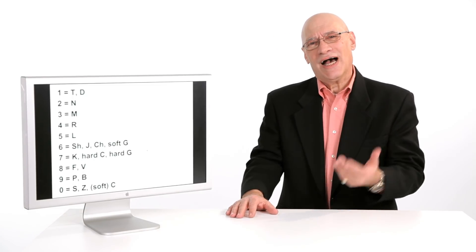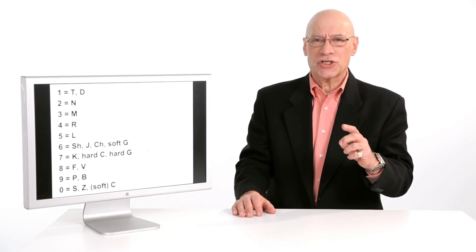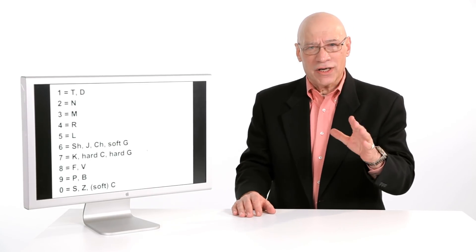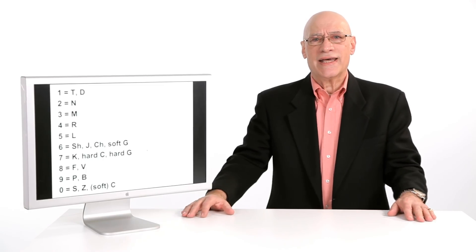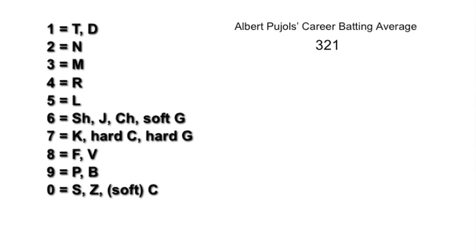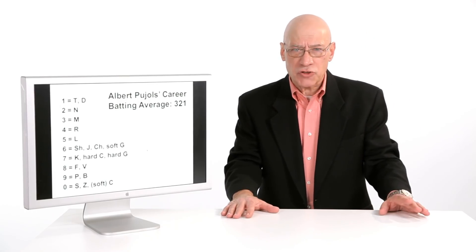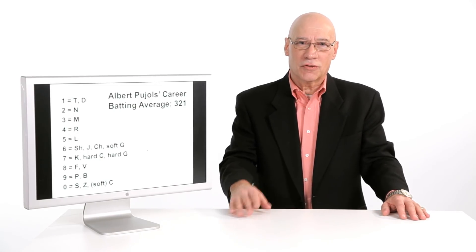So the question is, how can we make use of this? Well, if we can create a picture, then we can create something memorable. So let's say I had to remember the number three, two, one. I wanted to remember it because my favorite baseball player is Albert Pujols. His career batting average as of this recording is 321. Pretty darn incredible.